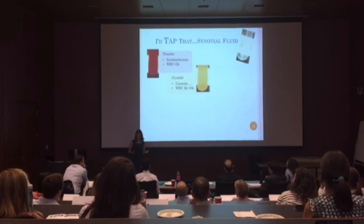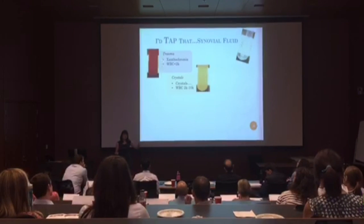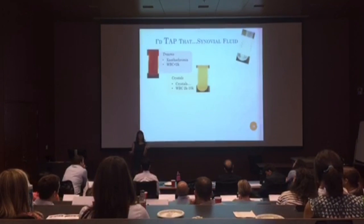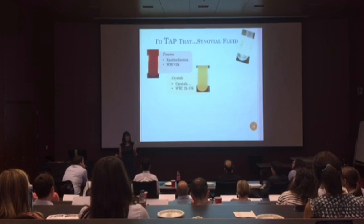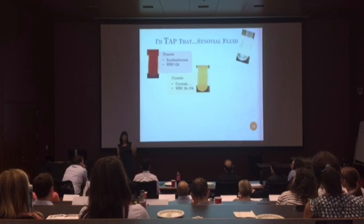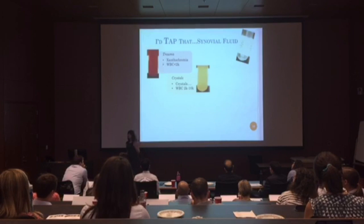Crystallopathy is inflammatory. You can see tens of thousands of white blood cells — even up to 40,000. It's going to be cloudy and dark. Under polarized light you're going to see crystals. But word of caution: just because you see crystals does not mean there isn't also a bacterial infection in that joint. Someone could have bad luck and have both bacterial infection and crystallopathy at the same time. So don't automatically forget about bacterial sepsis.